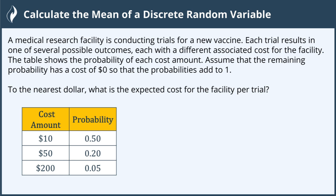So we're looking to find the mean of this discrete random variable. This is done the same way that we calculate expected value.